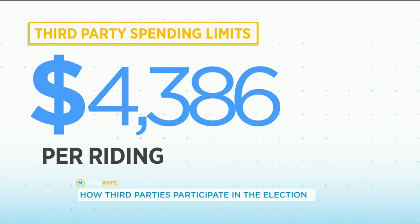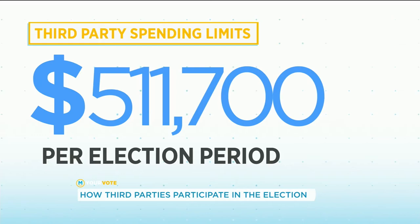During an election campaign, the political expression of third parties is regulated in four ways. First, there are spending limits on how much these third parties can spend on their political advocacy. Those spending limits are about $4,300 per each particular riding as the maximum they can spend, and overall during the entire campaign it's approximately $511,000. So there is an overall limit on how much these third parties can spend.